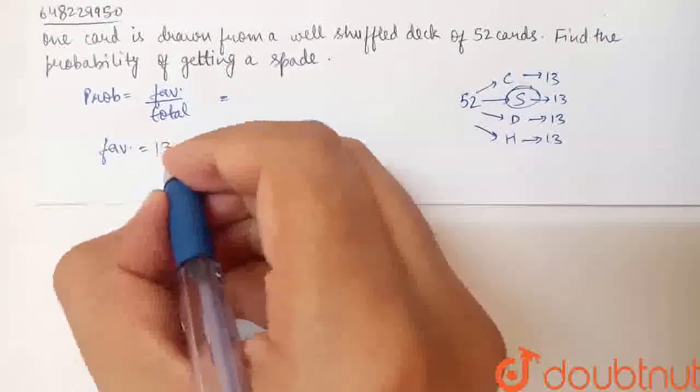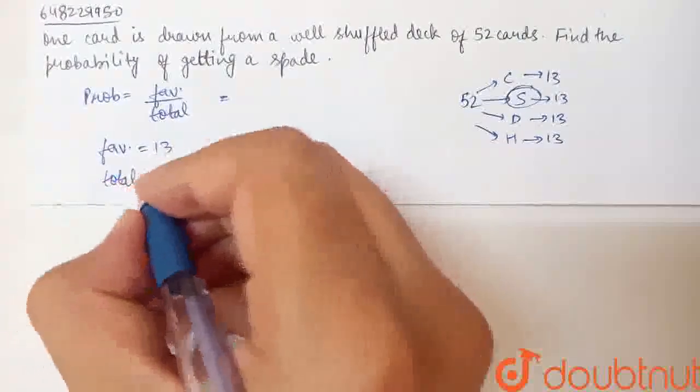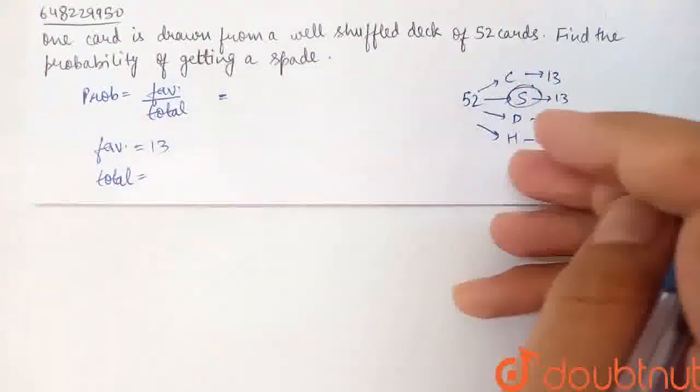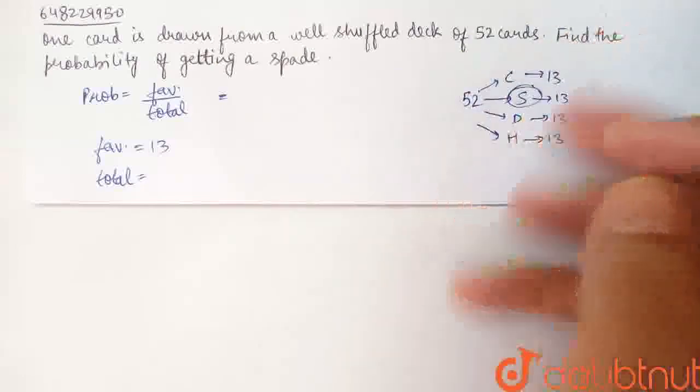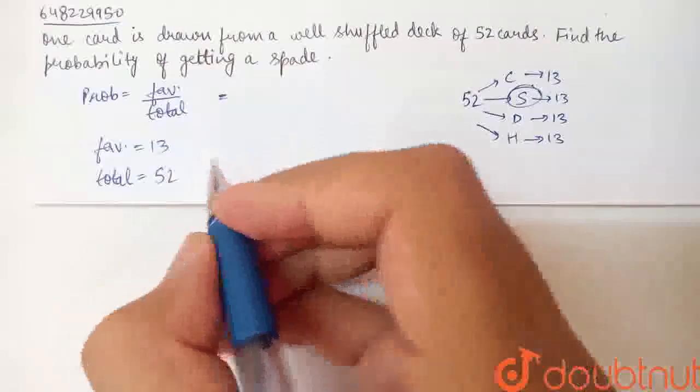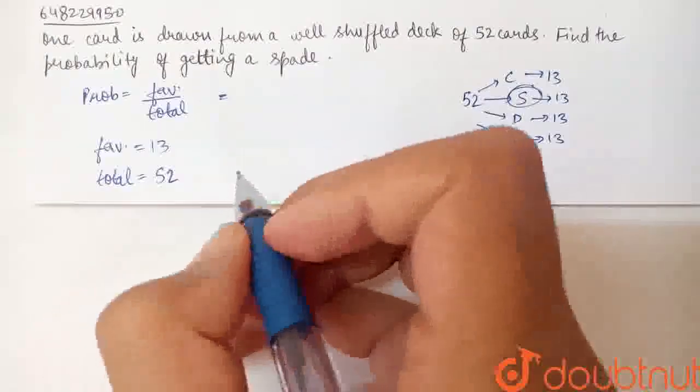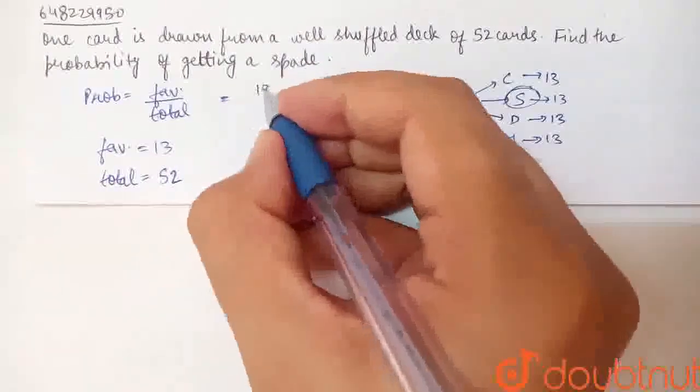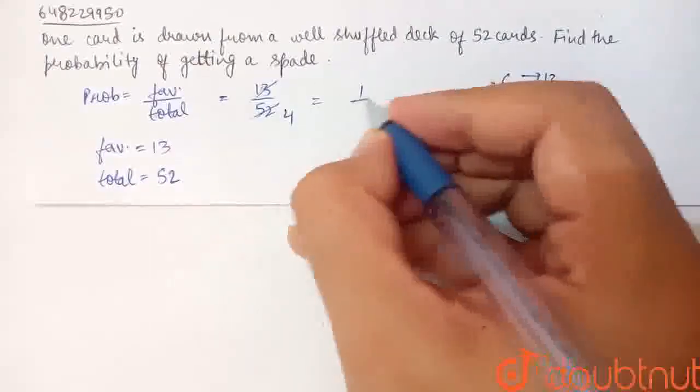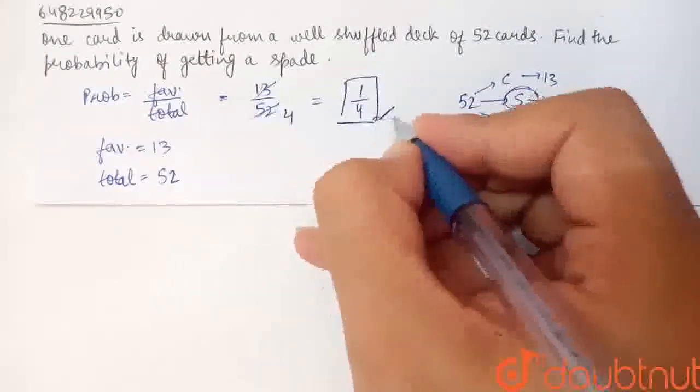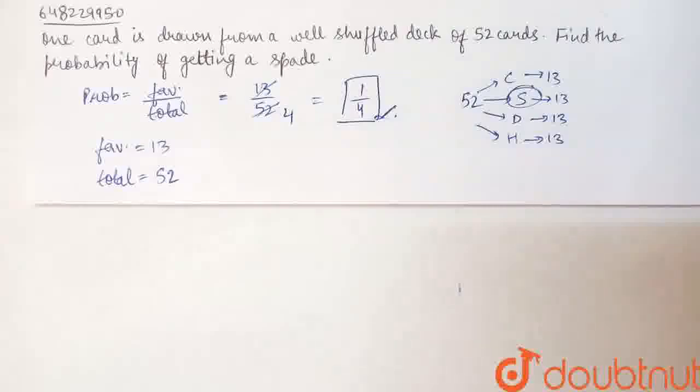The total is the 52 cards. So how many possible cases are there? 52 cases - each card represents one case. Then the probability is 13 by 52. Cancel out and this comes to 1 by 4. Hence the probability of getting a spade is 1 by 4.